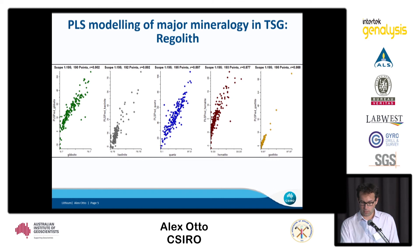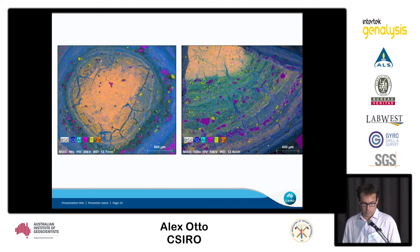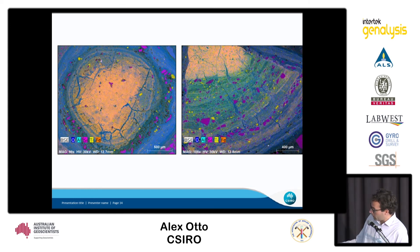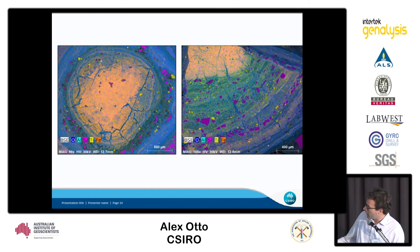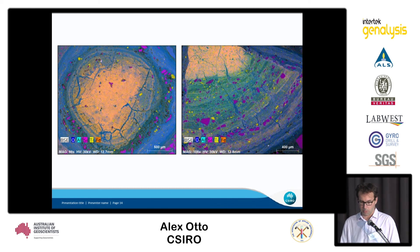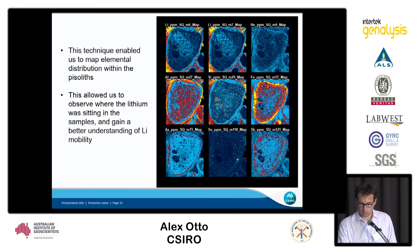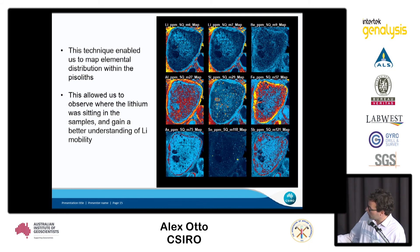First of all, this is an SEM map of a pisolith. While the core is more iron-rich, the matrix around the pisolith is typically more silicon-rich. What we really want to understand is the lithium distribution. This is my last slide — on the top left is a laser ablation ICP-MS map.